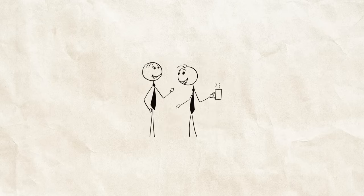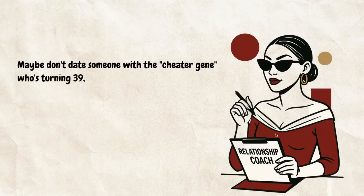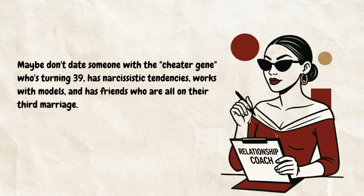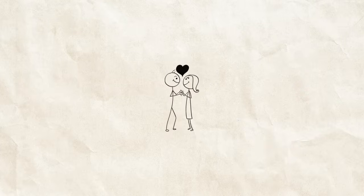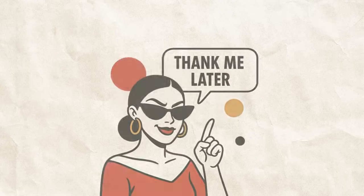So choose wisely, communicate openly, and maybe don't date someone with the cheater gene who's turning 39, has narcissistic tendencies, works with models, and has friends who are all on their third marriage. Just a thought. Now go use this knowledge to either strengthen your relationship or run like hell from the red flags you've been ignoring. Either way, you can thank me later.